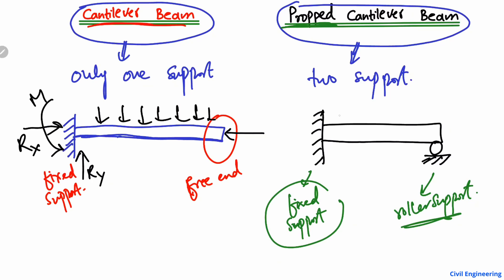When a vertical load is acting on this beam, it will be distributed into two parts — R1 and R2. Half of the load will be taken by the fixed support and half of the load will be taken by the roller support.